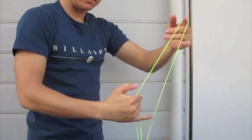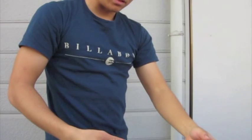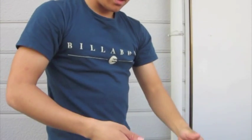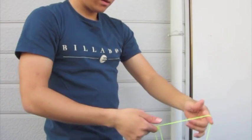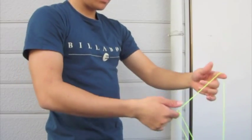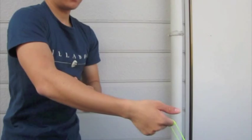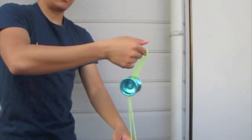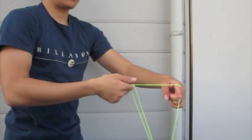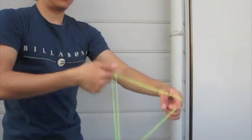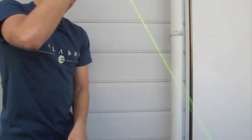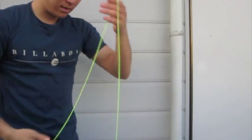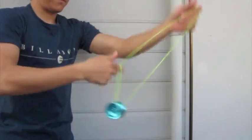Double onto this front string and it's going to be a split bottom mount with an extra loop. We're going to come all the way around like a brain twister, except hit this double string when it's coming around. You're going to hit it and then come all the way back.